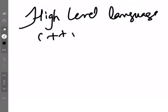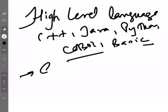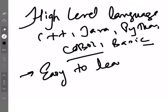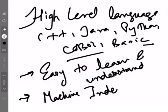In high-level languages, we have C++, Java, Python, COBOL, BASIC — all the languages you know come under high-level languages. One important feature is that they are easy to learn and understand — they have English-like words, so we can easily understand and learn them. And the biggest benefit is that they are machine independent — you learn the language once, but you can use it on any computer; it works the same way. That is the main benefit of high-level languages.